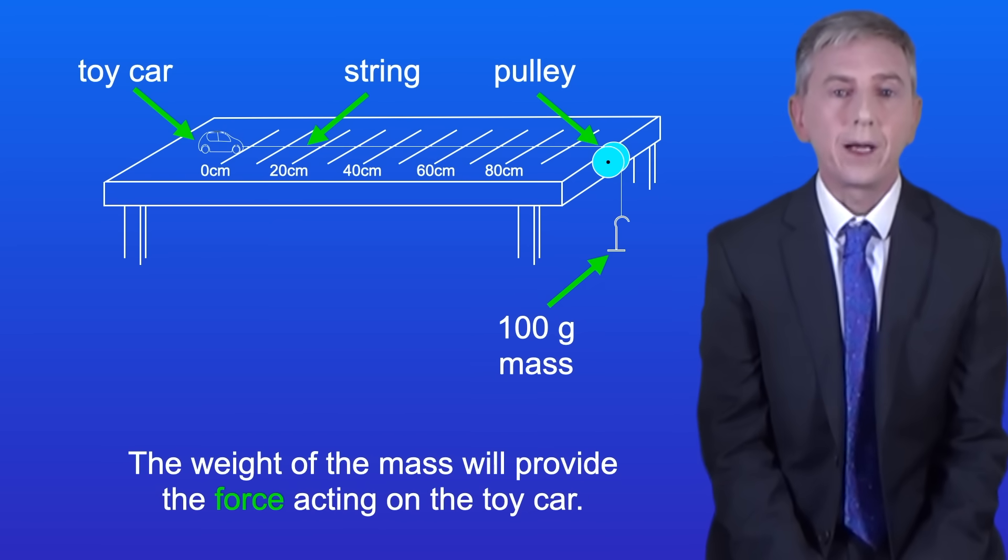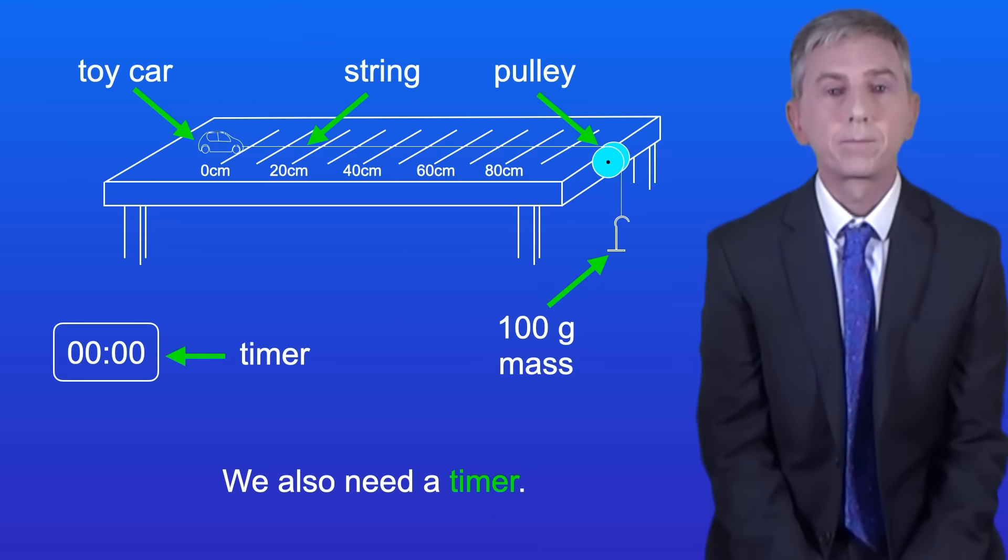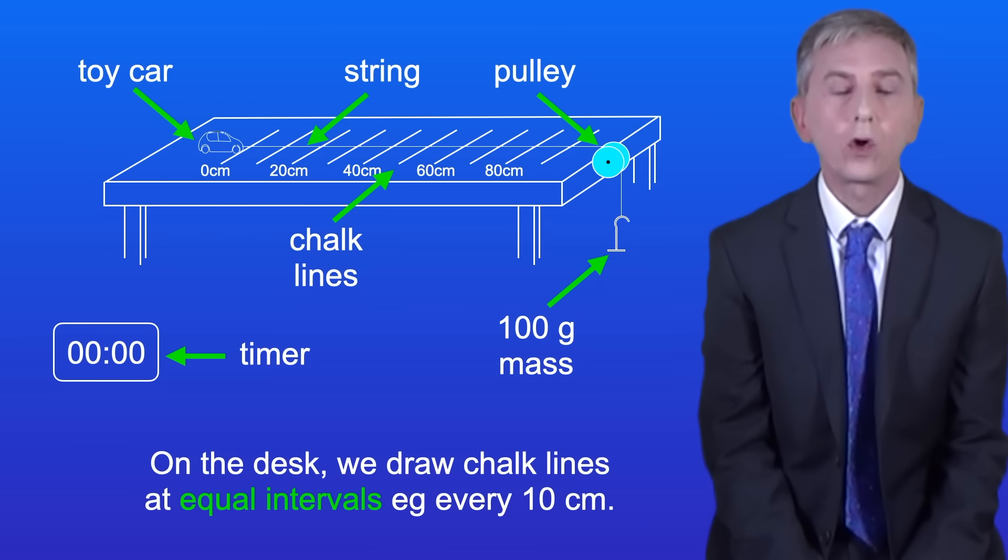The weight of the mass will provide the force acting on the toy car. We also need a timer. On the desk we draw chalk lines at equal intervals, for example every 10 centimeters.